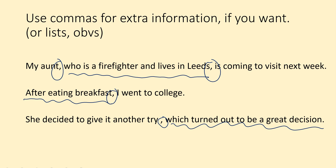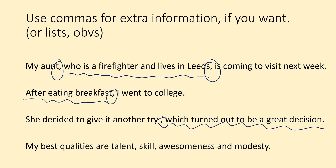For example: 'Luckily, I passed my exam.' You can put the opinion word at the beginning or the end. And the last use — you can obviously use commas in a list: 'My best qualities are talent, skill, awesomeness, and modesty.' You just put a comma between each item. You don't need one in front of 'and' — that's called the Oxford comma; some people think it's important, but GCSE examiners aren't going to worry too much, so I think it's clearer not to.